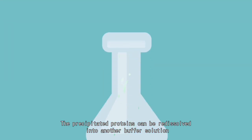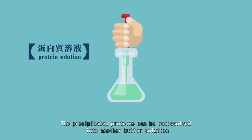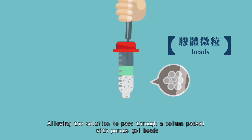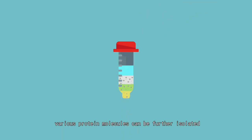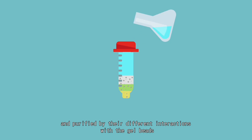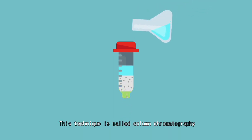The precipitated proteins can be re-dissolved into another buffer solution, allowing the solution to pass through a column packed with porous gel beads. Various protein molecules can be further isolated and purified by their different interactions with gel beads. This technique is called column chromatography.